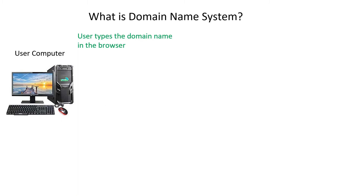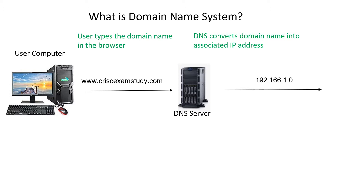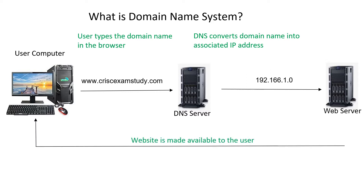The user types the domain name in the browser. This request will go to the DNS server. The DNS server converts the domain name into its associated IP address, which is then sent to the web server, and finally the website is made available to the user.